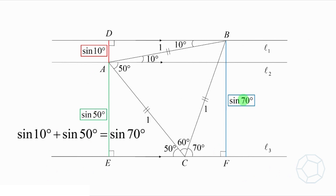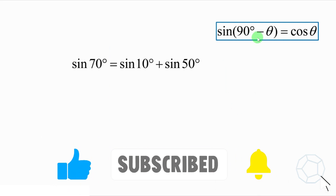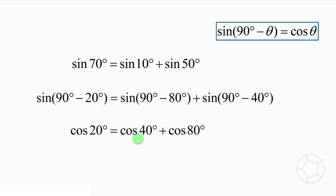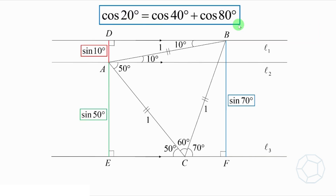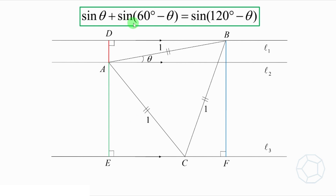But this is not the end of the story. If we make use of the identity sin(90 degrees minus theta) equals cos theta, then we can change the form of all sine terms. Now we can get: cosine 20 degrees equals cosine 40 degrees plus cosine 80 degrees. The three angles differ by a factor of 2 — that's something about the double angle formula. Can you use the same figure to prove this identity? More generally, can you give a visual proof of the identity sin theta plus sin(60 degrees minus theta) equals sin(120 degrees minus theta)? Tell me your idea in the comment section below.